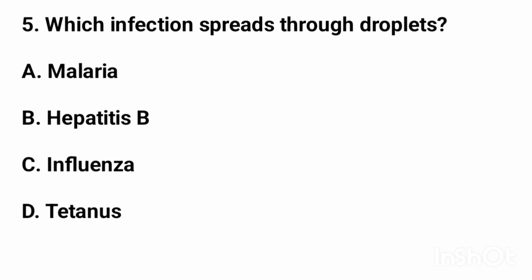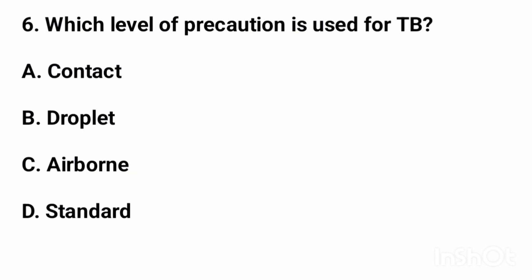The right answer is option C: influenza. Question number 6: Which level of precaution is used for TB? The right answer is option C: airborne.